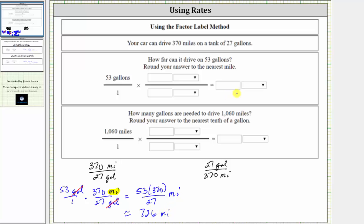So to complete the question here, we multiplied by the rate of 370 miles per 27 gallons, and this product to the nearest mile is 726 miles.